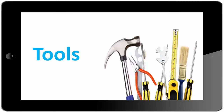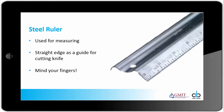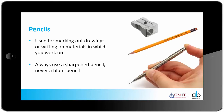We begin with tools. This is a steel ruler. It is often used for measuring and as a straight edge or a guide for using our cutting knife. Very important to mind your fingers when you are using a knife while cutting material for model making. This ruler has a groove in it for our fingers to sit in and be kept in a safe position.